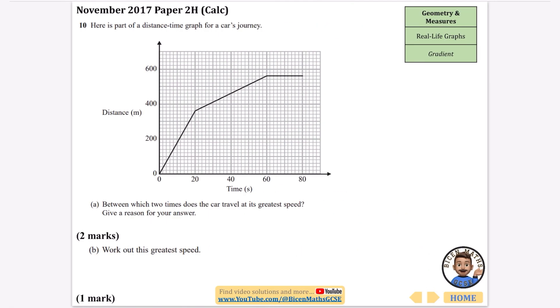Let's get started. Here is a part of a distance-time graph for a car's journey. We've got the distance along the side and the time along the bottom. It asks between which two times does the car travel at its greatest speed, and give a reason for your answer. When you have these distance-time graphs, how steep the line is tells you how fast it's moving. This section is going to be the fastest because the gradient is the steepest. The answer is between 0 to 20 seconds, because the gradient is the steepest.